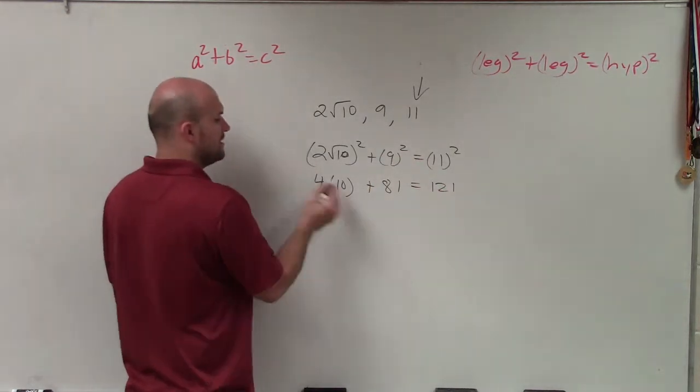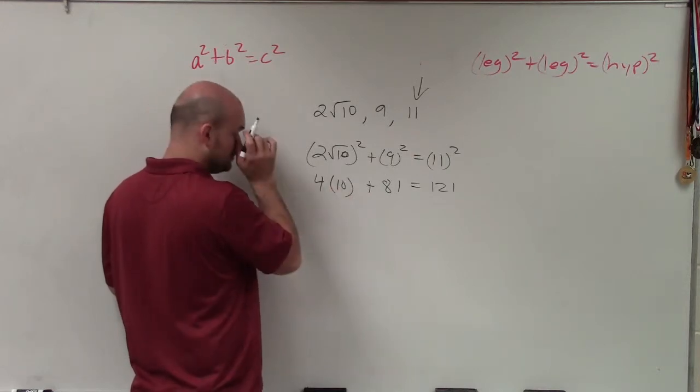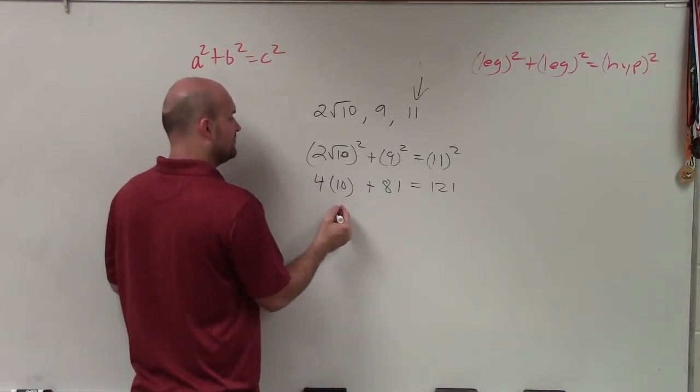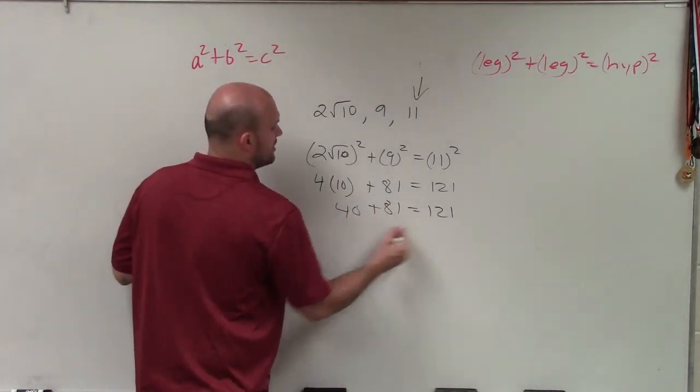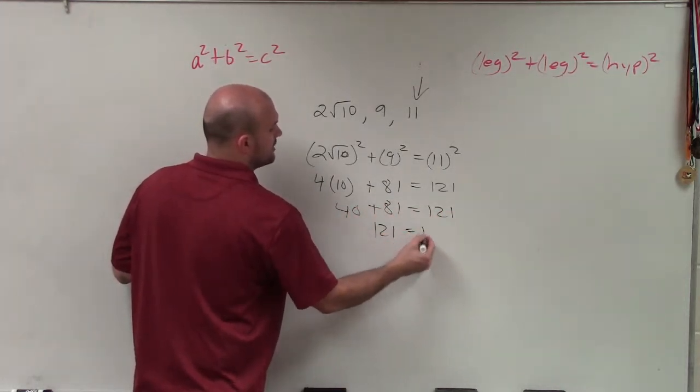...which is 121. Now, 4 times 10 is 40, plus 81 equals 121. So 121 equals 121.